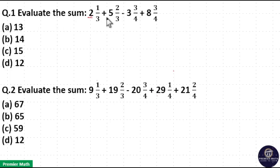Evaluate the sum. Here first add the integers. So 2 plus 5 is 7. 7 plus 8 is 15. 15 minus 3 is equal to 12.